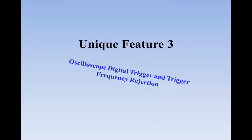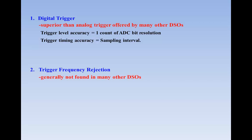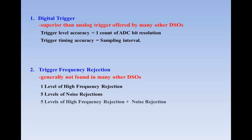Unique Feature 3: Oscilloscope digital trigger and trigger frequency rejection. While many DSOs in the market are still using analog trigger, the second-generation VT DSOs use digital trigger. Digital trigger has much better level and timing accuracy than analog trigger. Trigger frequency rejection, a function generally not found in other oscilloscopes, can be used to filter out noises from the trigger signal to prevent false triggering and stabilize waveform display.